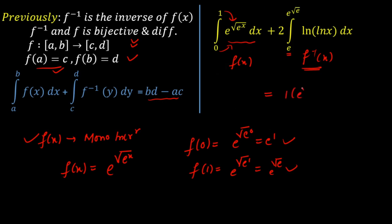Now I can apply the integral identity. The value of the combined integration equals the product of the upper limits minus the product of the lower limits: b·d minus a·c = 1 · e raised to the power of root over e, minus 0 · e. So the final answer is e raised to the power of root over e.